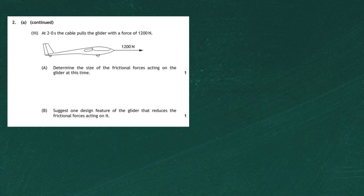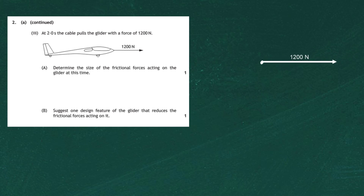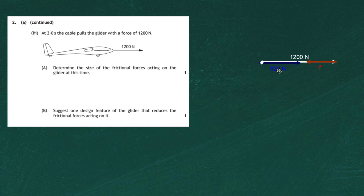Part a(iii): at 2.0 seconds the cable pulls the glider with a force of 1200 newtons. We need to determine the size of the frictional forces acting on the glider. We draw a dot for the glider and add the forces: 1200 newtons forward and a frictional force f acting backwards. We then add the vectors by placing one vector's tail against the other's nose.